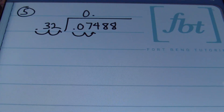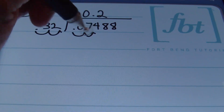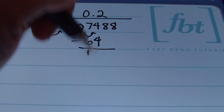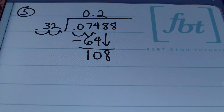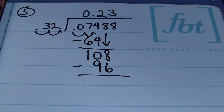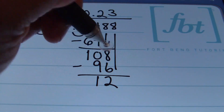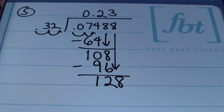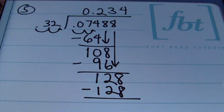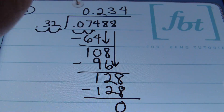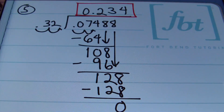32 goes into 74 twice; two times 32 is 64; subtract and bring down the next digits to get 108. 32 goes into 108 three times; three times 32 is 96; subtract and bring down to get 128. 32 goes into 128 four times; four times 32 is 128; the problem terminates with zero. My result is 0.234 — be very aware of your place values, as three places to the right of the decimal is the thousandths place.